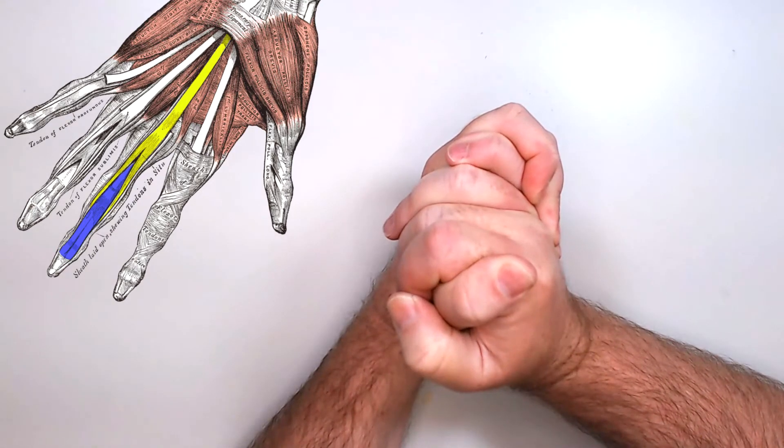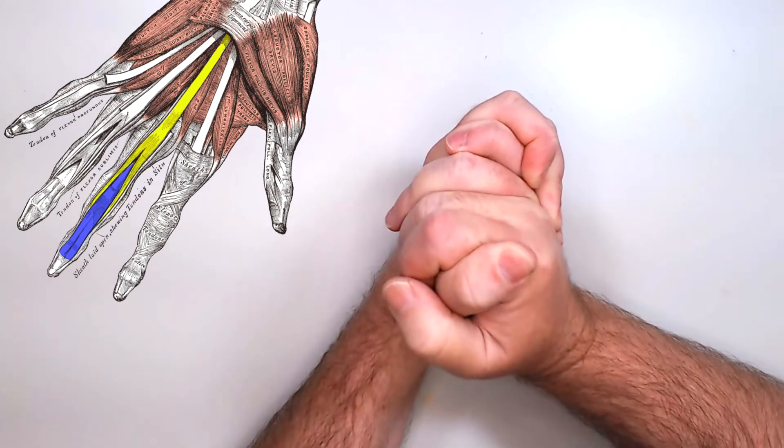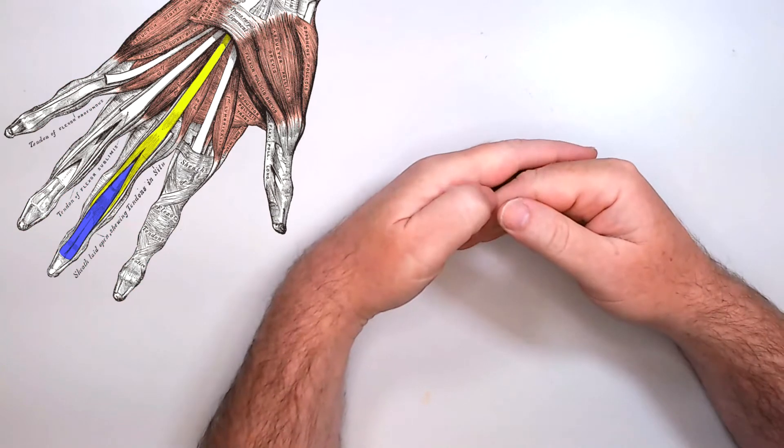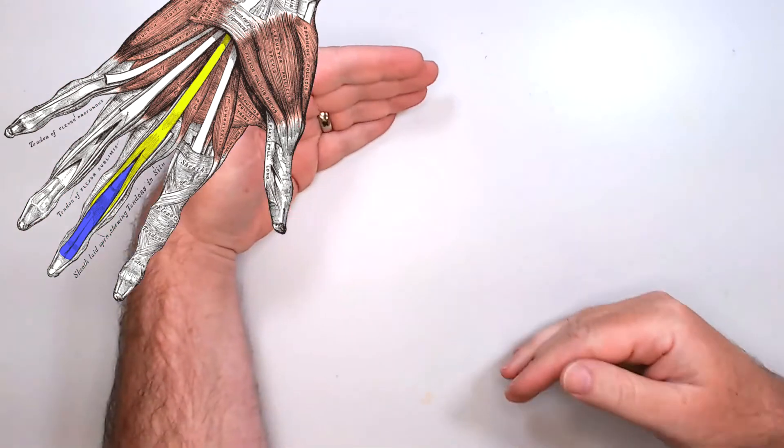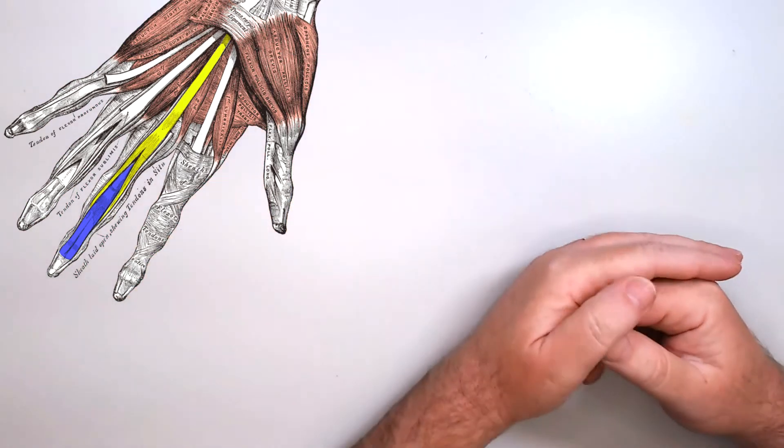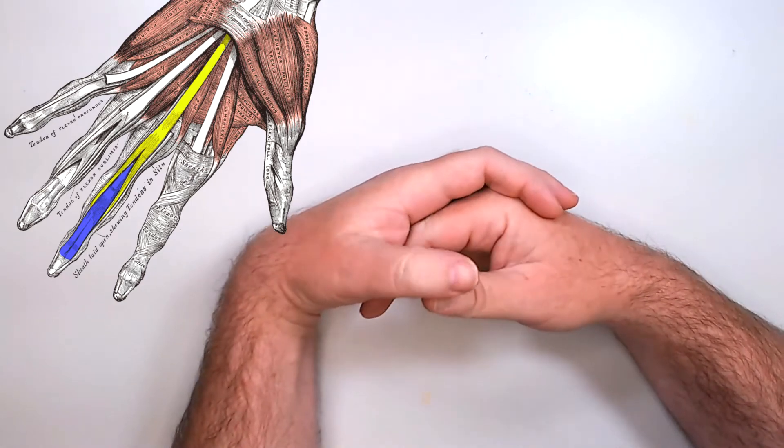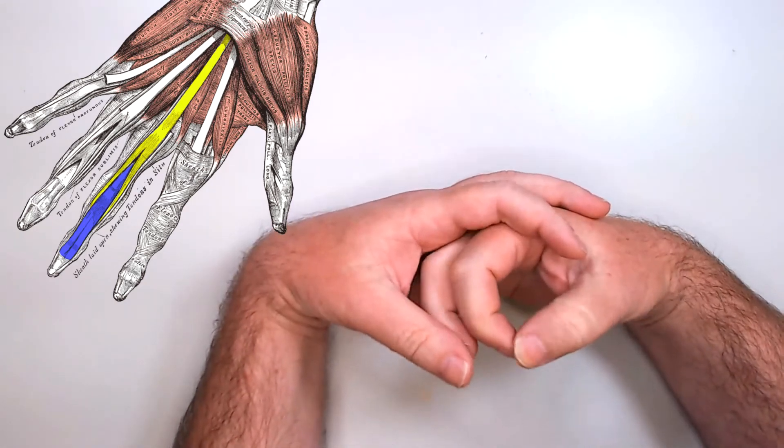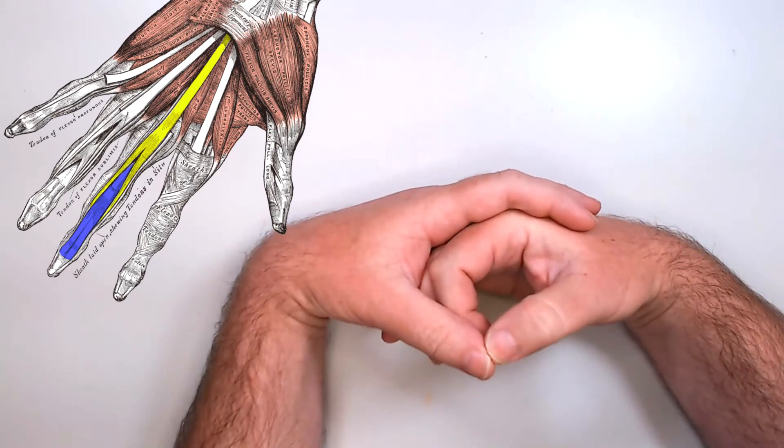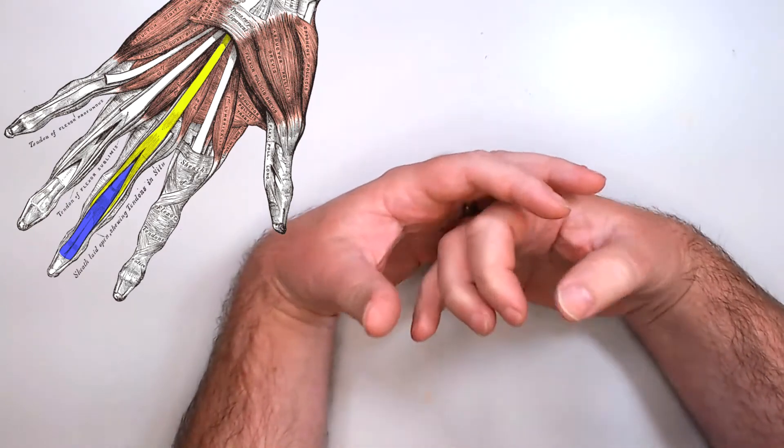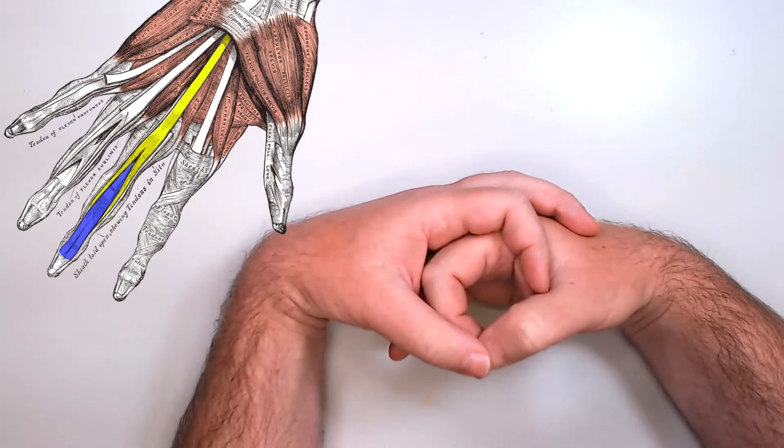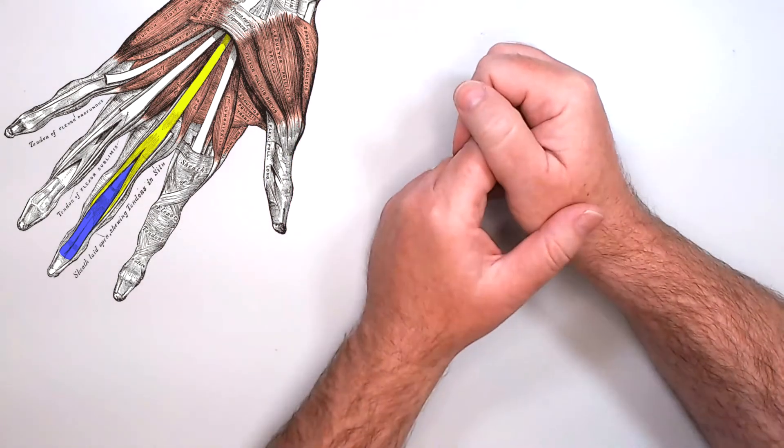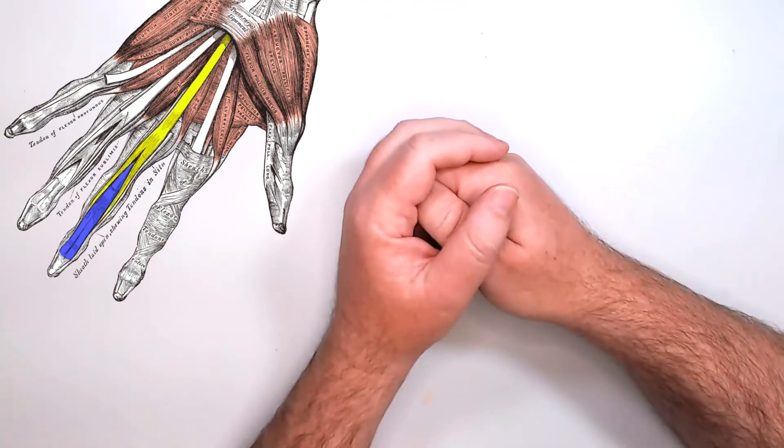In these muscles, the tendon of flexor digitorum profundus actually has a longer span than that of the more superficial muscle flexor digitorum superficialis, and they achieve this by kind of cheating. The tendon of flexor digitorum superficialis is split, and the deeper tendon, the blue, shoots out between that split to continue out onto the distal phalanx.